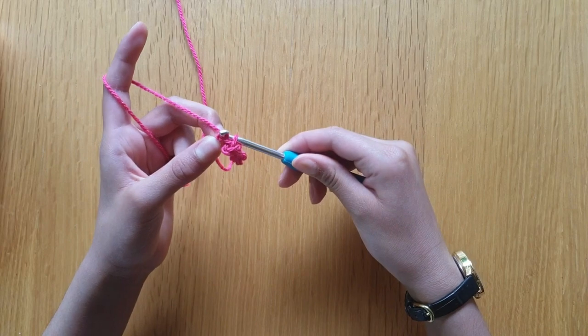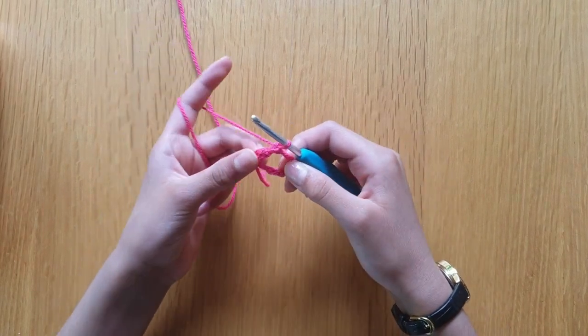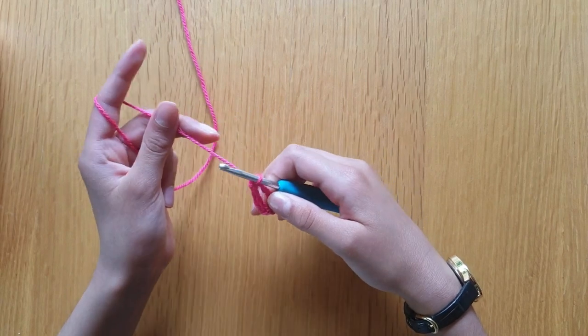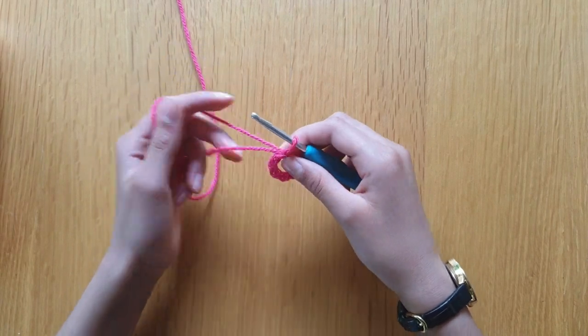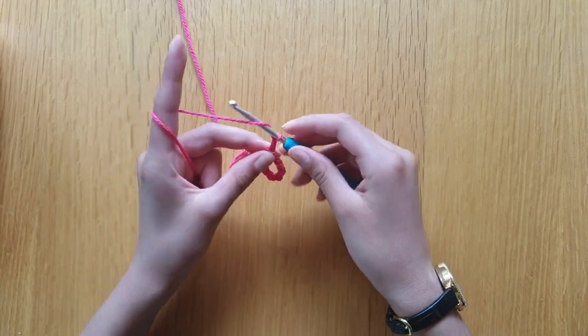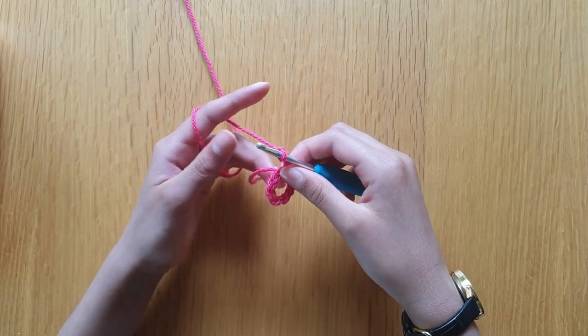Now we're going to yarn over through the loop and then we're going to go through the loop again. That is the slip stitch. Now we're going to start with the real pattern. We're going to chain three, so one, two, three.